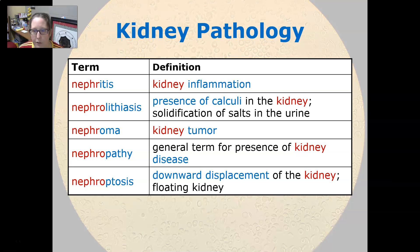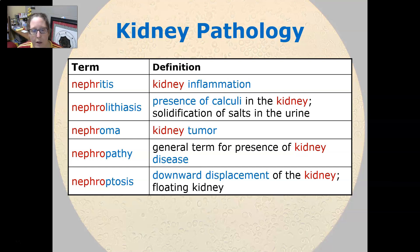Nephritis is kidney inflammation. Nephrolithiasis is the presence of calculi, or stones, in the kidney; those calculi are the solidification of salts in the urine. Nephroma is a kidney tumor. Nephropathy is the general term for the presence of kidney disease.